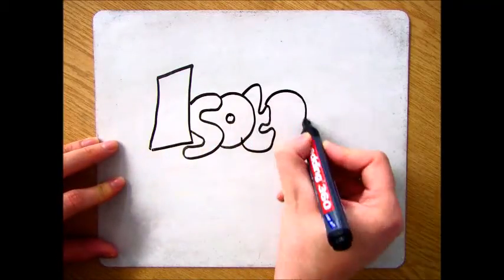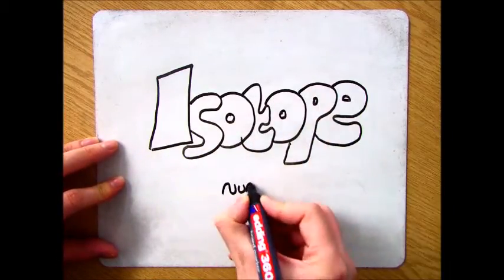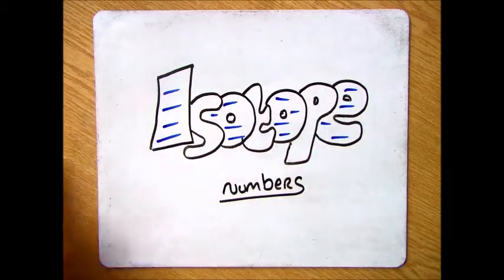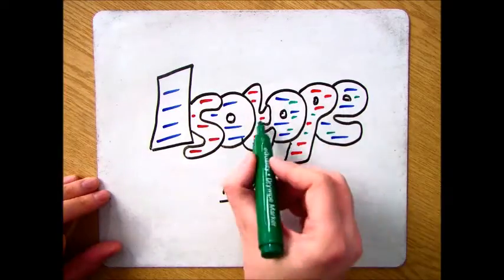Welcome to this video on isotopes. What we're going to be focusing on here is why all elements on the periodic table don't have whole numbers for their mass number.